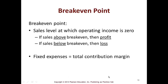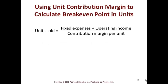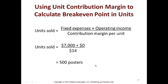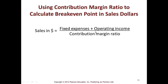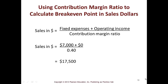Fixed expenses equal total contribution margin, and total sales equals total expenses — these are all ways to describe break even. Units sold equals fixed expenses plus operating income divided by the contribution margin per unit. Using Kay's Posters: $7,000 fixed expenses plus zero operating income divided by the $14 contribution margin per unit equals 500 posters. You need to sell 500 posters to break even. For break-even in dollars, you take fixed expenses plus operating income divided by the contribution margin ratio to get $17,500 in sales dollars.